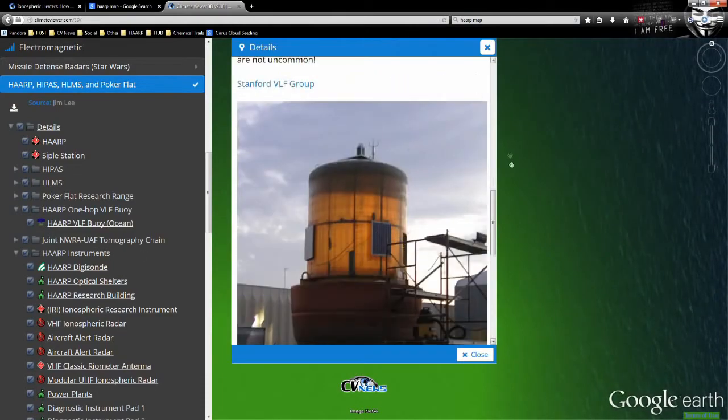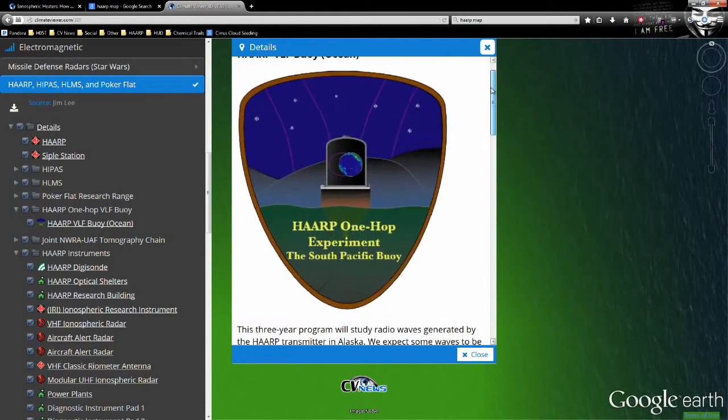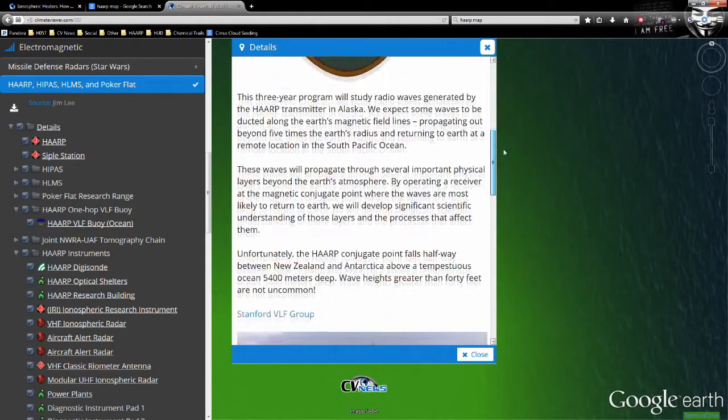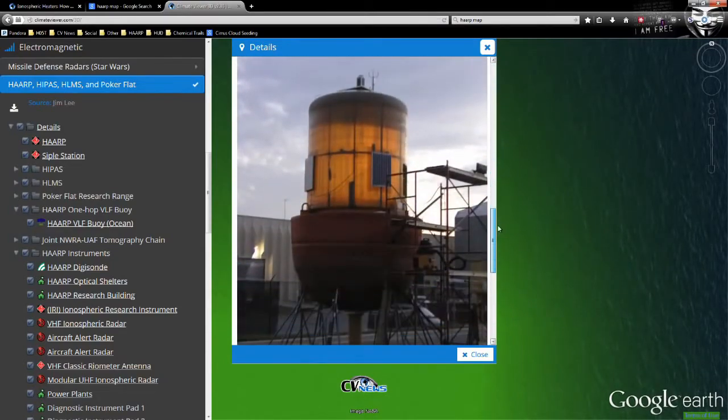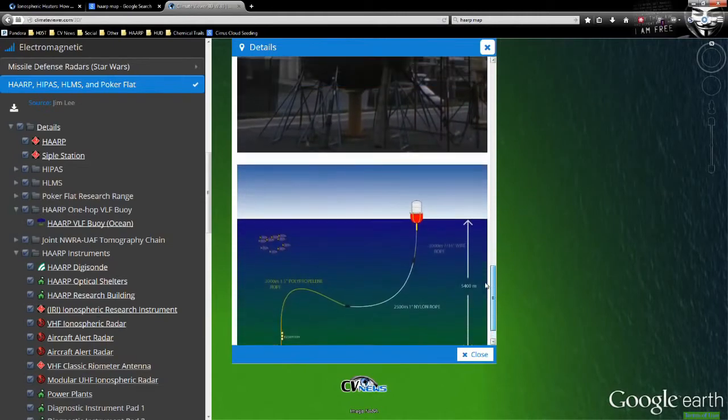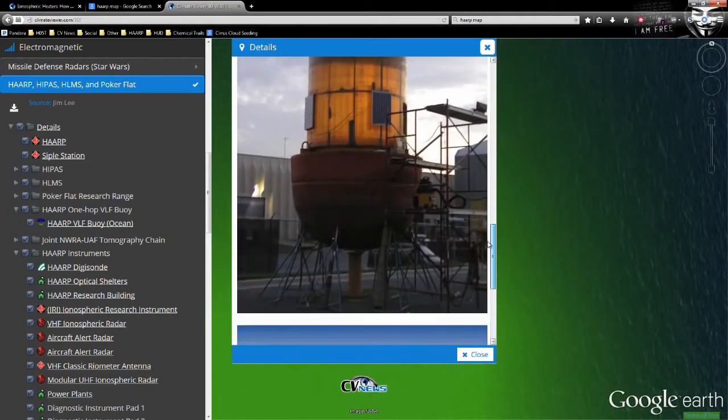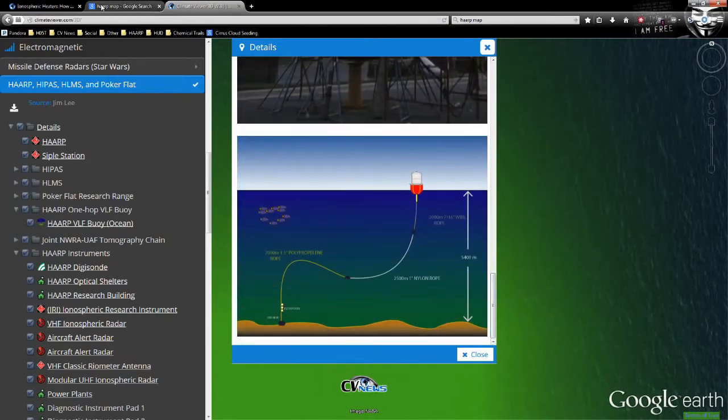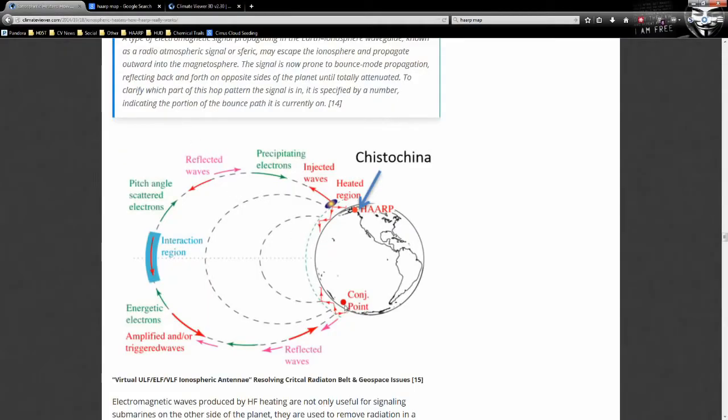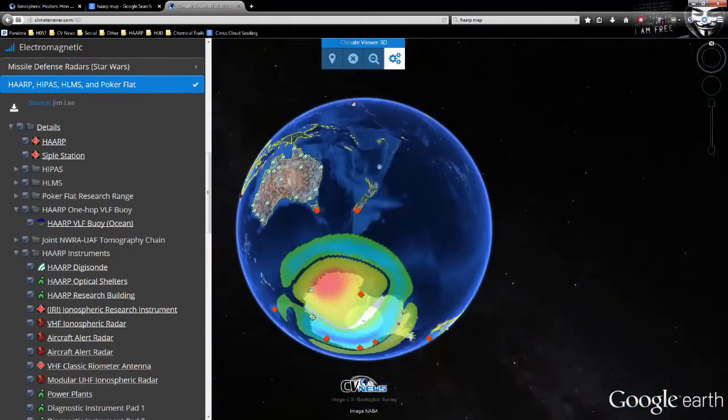And it's a VLF buoy. So basically, the place where HAARP lands in the ocean, because it has a very specific spot that when they fire it in the sky, that's where it's going to land. They put a receiver out there to listen for it. And that conjugate point is down here, right off the coast of Australia.